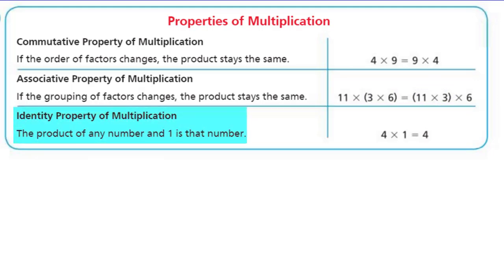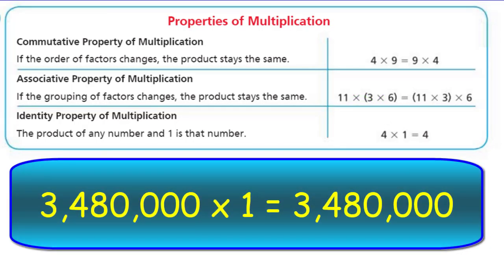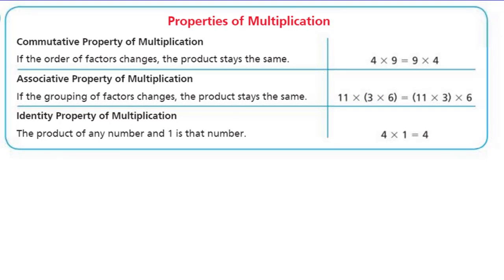Now we have the identity property of multiplication. The product of any number and 1 is that number. Notice we're using 1, not 0. When you multiply any number by 1, it stays the same. 4 times 1 equals 4. Even 3,480,000 times 1 equals 3,480,000. It doesn't change anything.